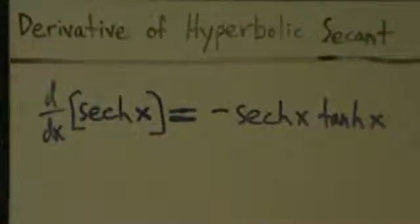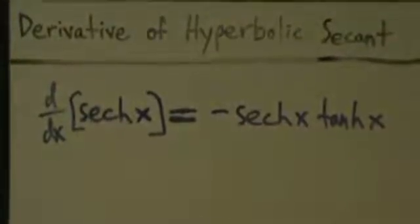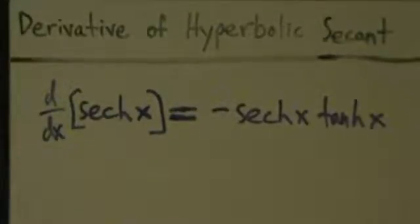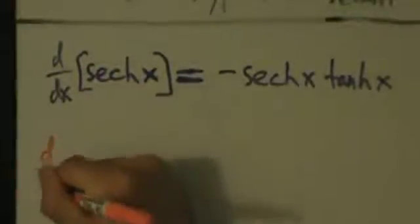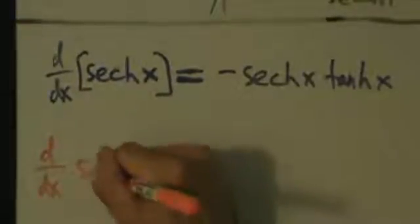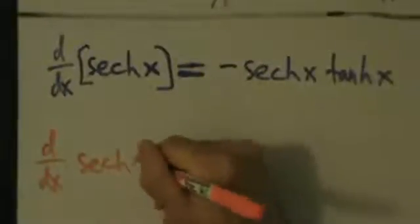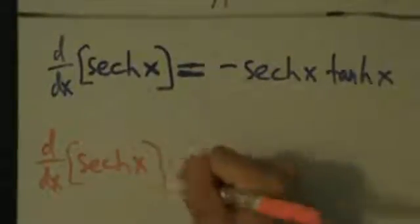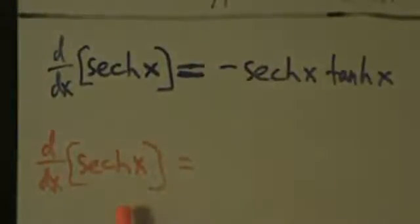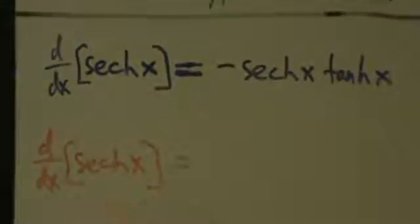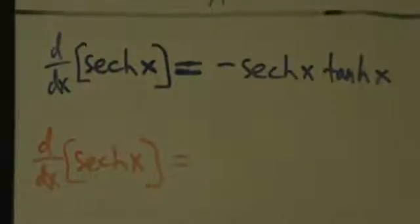Just like in the last video, I want to write down some stuff and show you that there are a bunch of different ways that we can go about doing this, but we're only going to do it one way. Let's go ahead and start with d/dx of hyperbolic secant of x. Hyperbolic secant of x, that is 1 over hyperbolic cosine.